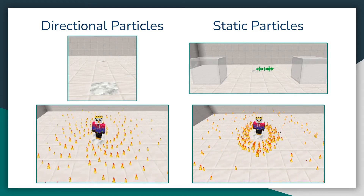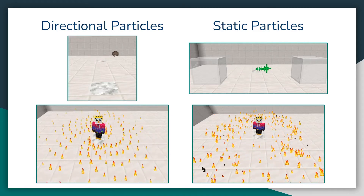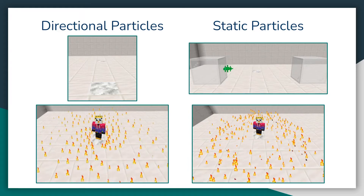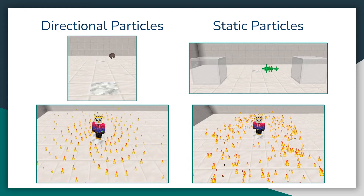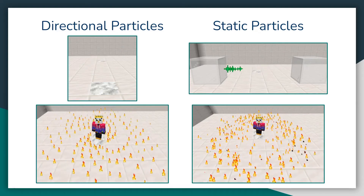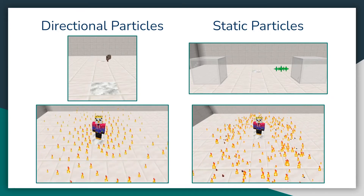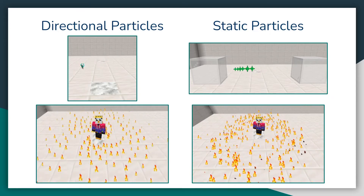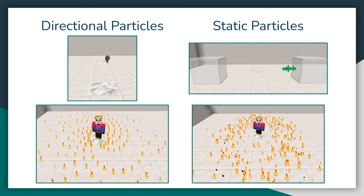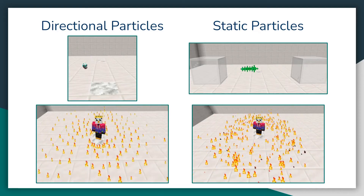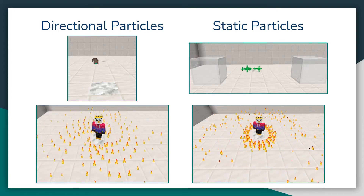Directional particles are particles that spawn at a specific position and then you can specify a direction vector that the particles will shoot at. A static particle is basically just a particle that spawns at the location and does not move until it eventually disappears. You can see just a couple of examples of each of these particles — one that creates an individual particle and a couple of example particle effects that show off each of these types.